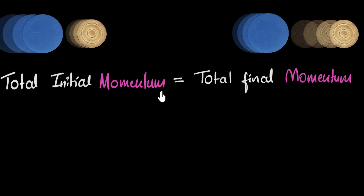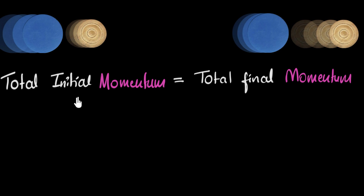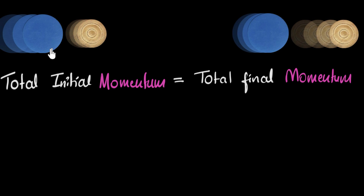Whenever we want to prove something, the first obvious question is: where do we start? We can start by trying to write this mathematically. What do we mean by total initial momentum? Remember, momentum is just mass times velocity. So total initial momentum would be mass times velocity of the first coin before the collision, plus mass times velocity of the second coin. And total final momentum would be the same thing after collision. So since there'll be masses and velocities, let's go ahead and give names to them.